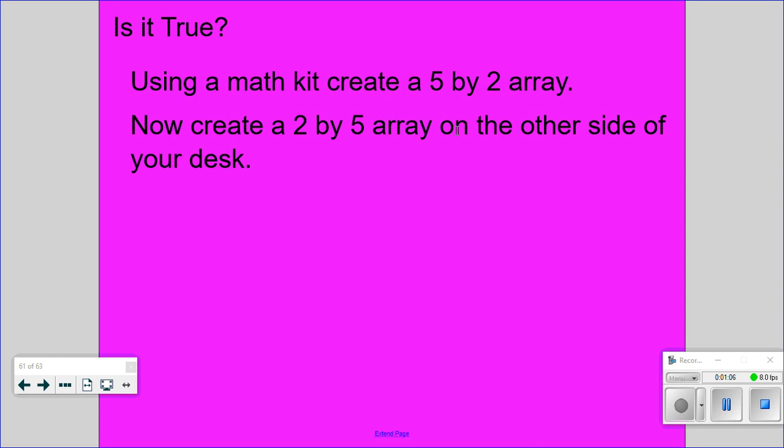So I see Logan's got 2 arrays, Lincoln's getting 2 arrays, Bladen's got it, Sean's got it. Many of you, when you made a 5x2 array, you did 5 going down and then 2 across. When you made your 2x5 array, how was it different?